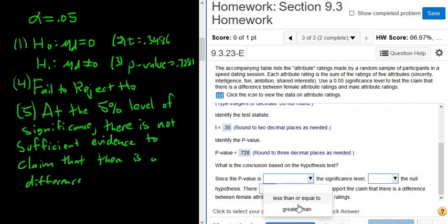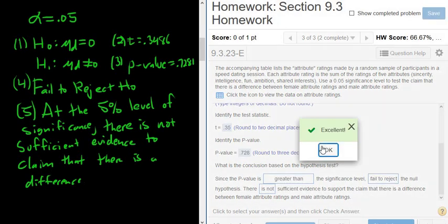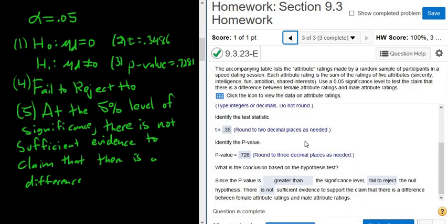Since the p-value is greater than the significance level, we fail to reject the null hypothesis. There is not sufficient evidence to support the claim that there is a difference. Let's try it. And that's it. I hope that made sense. Thank you.